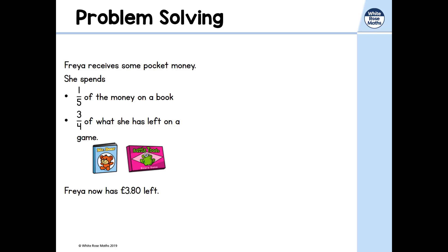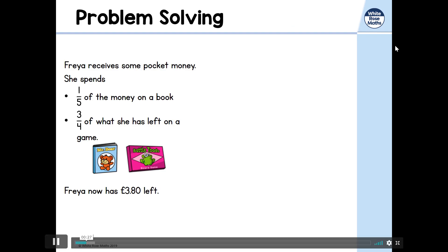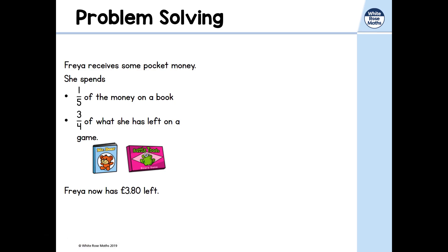We don't have a question to solve yet — let's think about what we could work out. We could work out what fraction is left, how much money she had to start with, or what fraction was spent on the book and game. The question asks: how much pocket money did she receive?